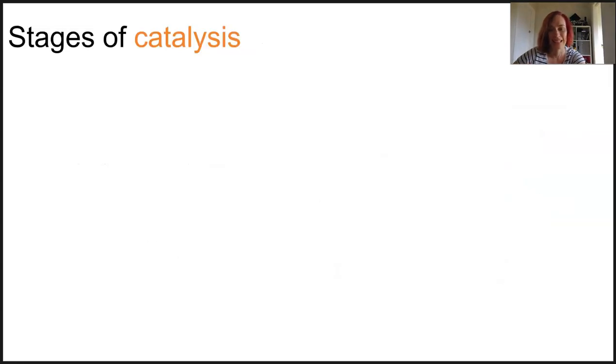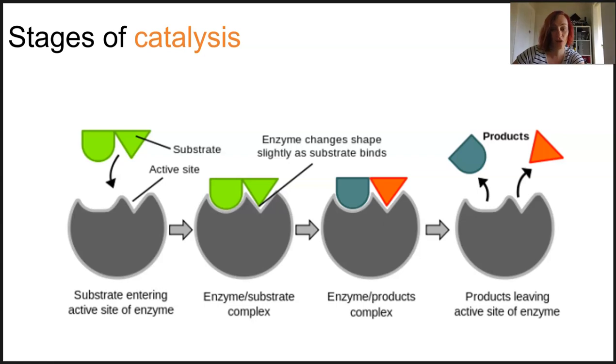Catalysis is the process of increasing that rate of the chemical reaction. They are catalysts, and it has three main stages. First, the substrate's got to bind to the active site. Then the substrate's actually changed into the product, and then the product is released.